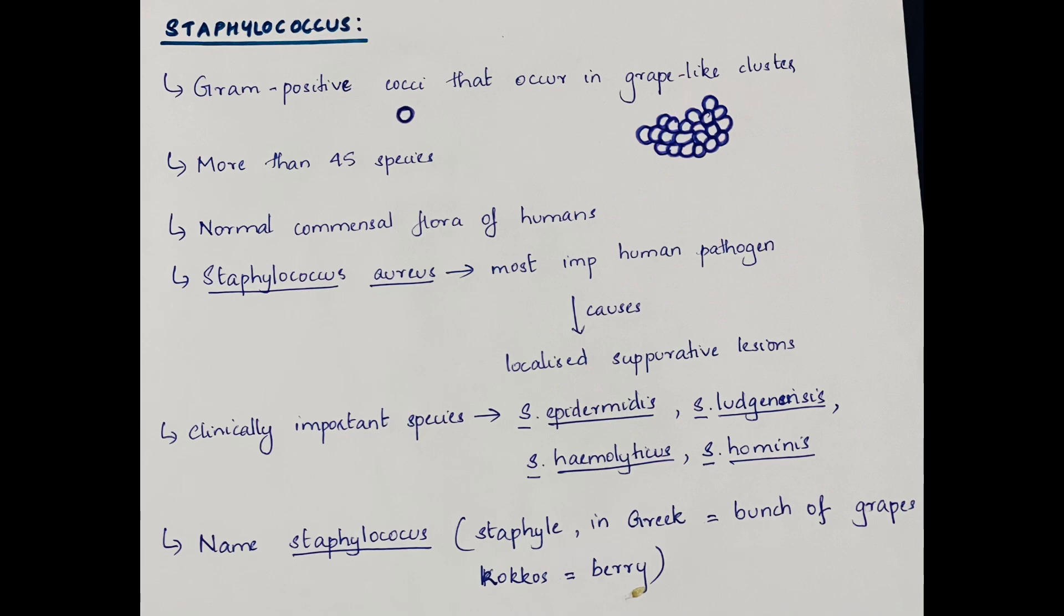Staphylococci are gram-positive cocci that occur in grape-like clusters. There are more than 45 species known. They are part of the normal commensal flora of humans. Staphylococcus aureus is the most important human pathogen commonly causing localized suppurative lesions.